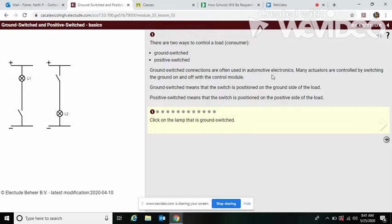Ground switch connections are often used in automotive electronics. Many actuators are controlled by switching the ground on and off of the control module. Ground switch means that the switch is positioned on the ground side of the load. Positive switch means the switch is positioned on the positive side of the load.